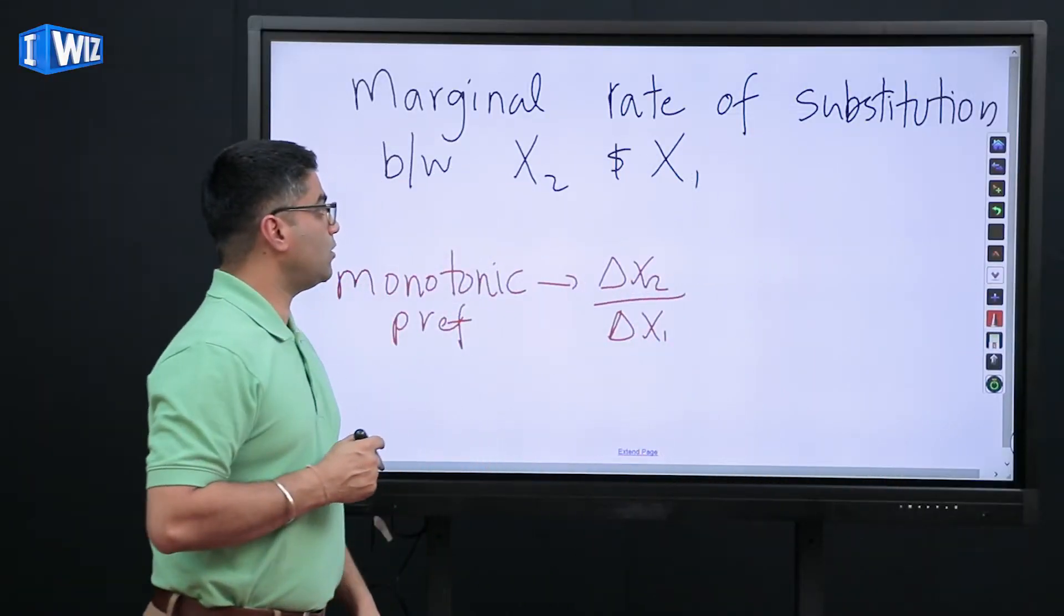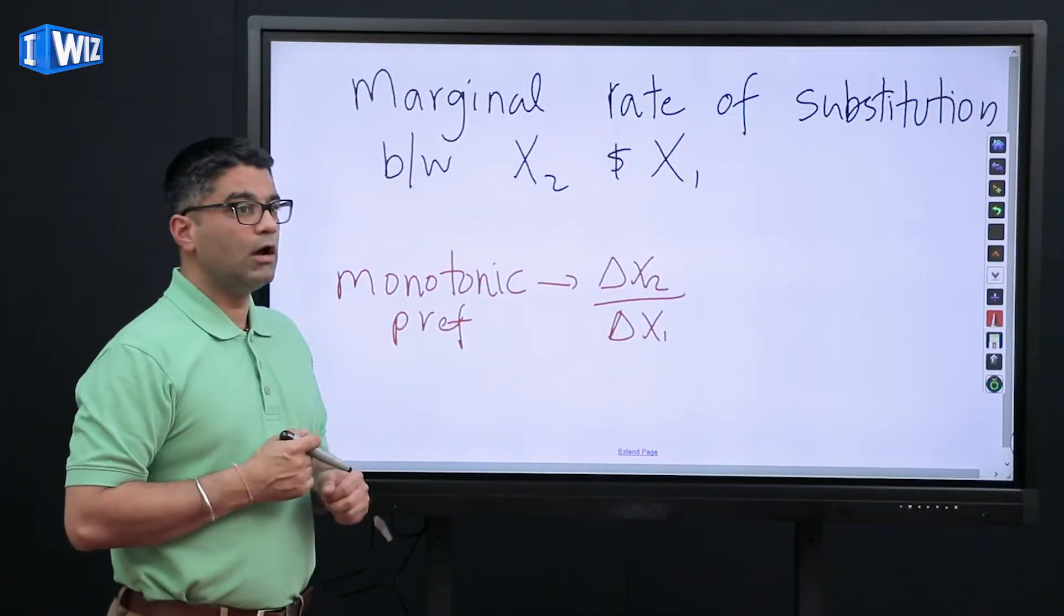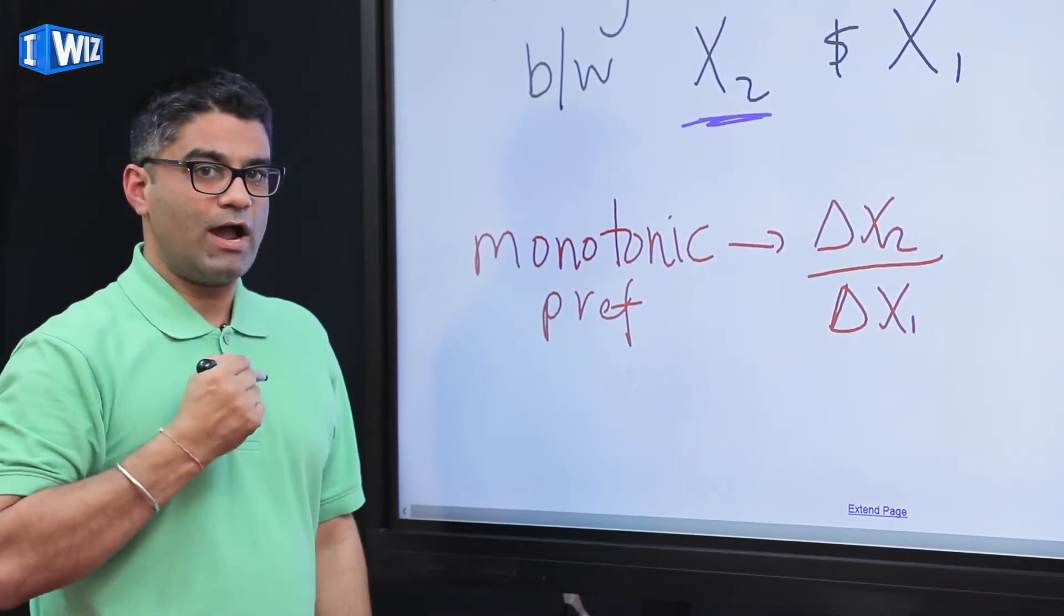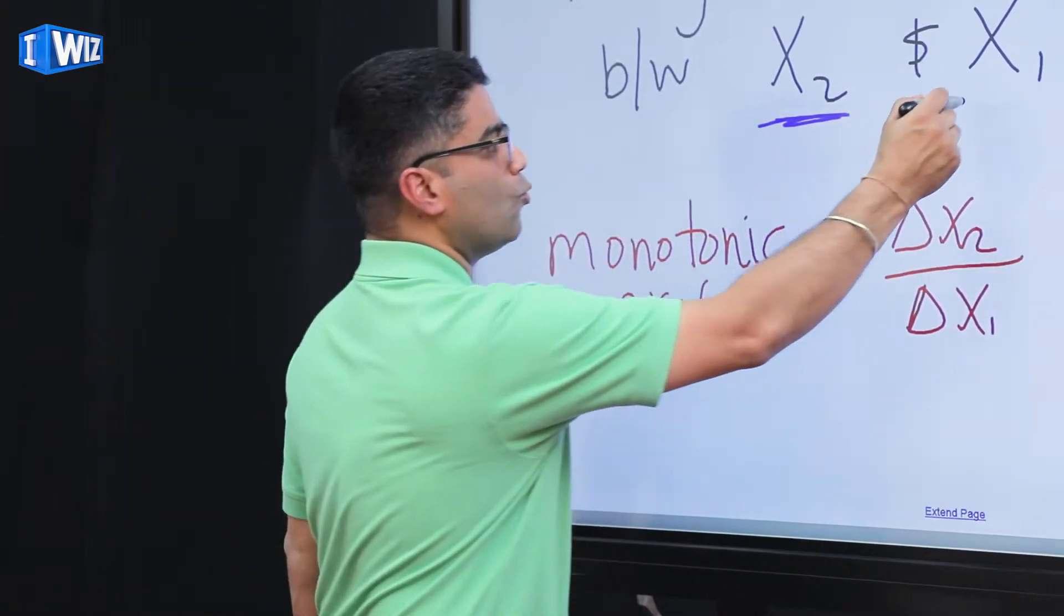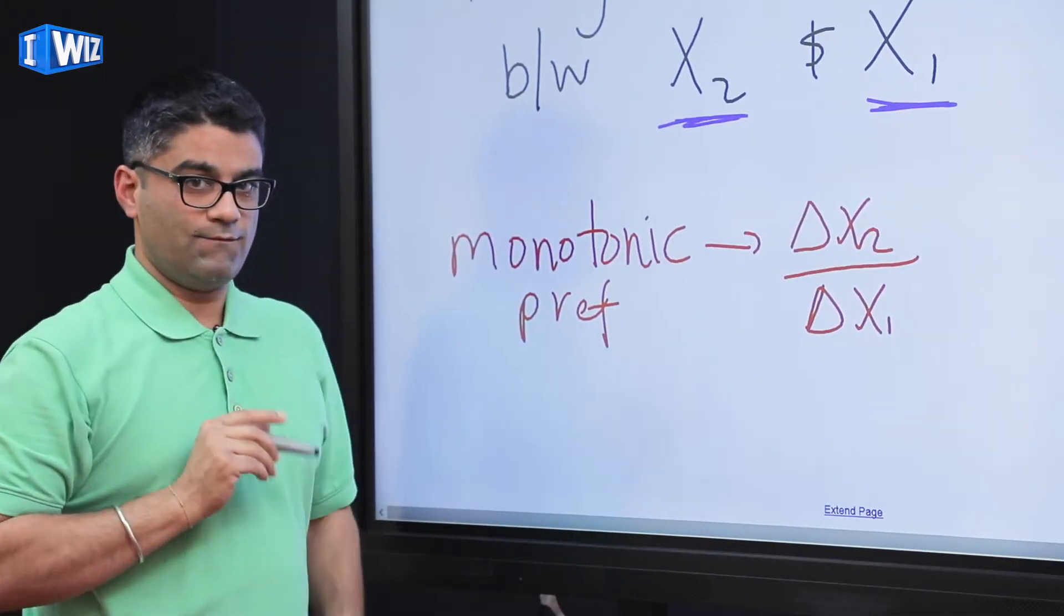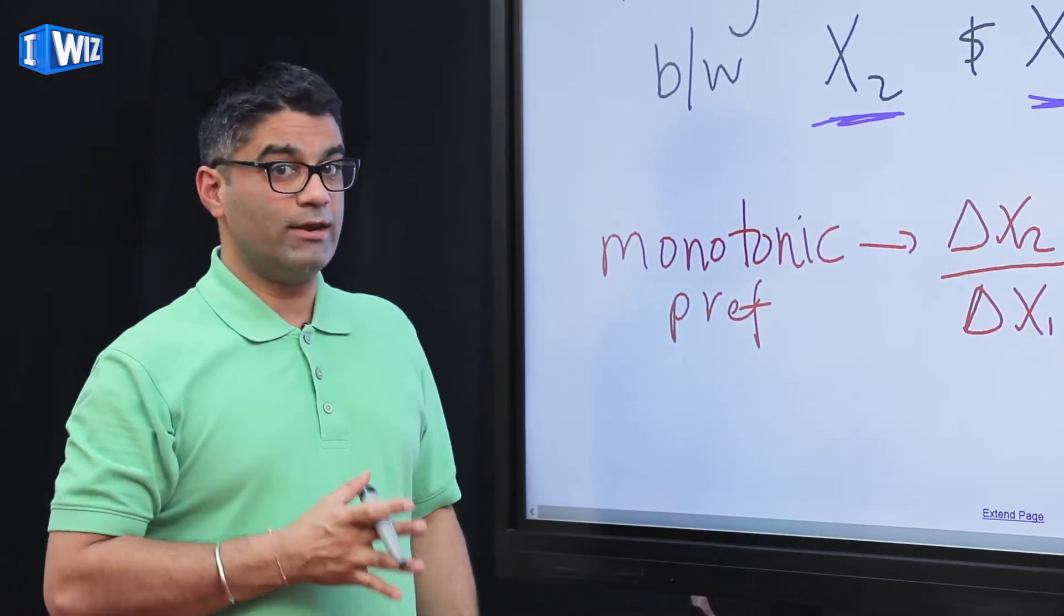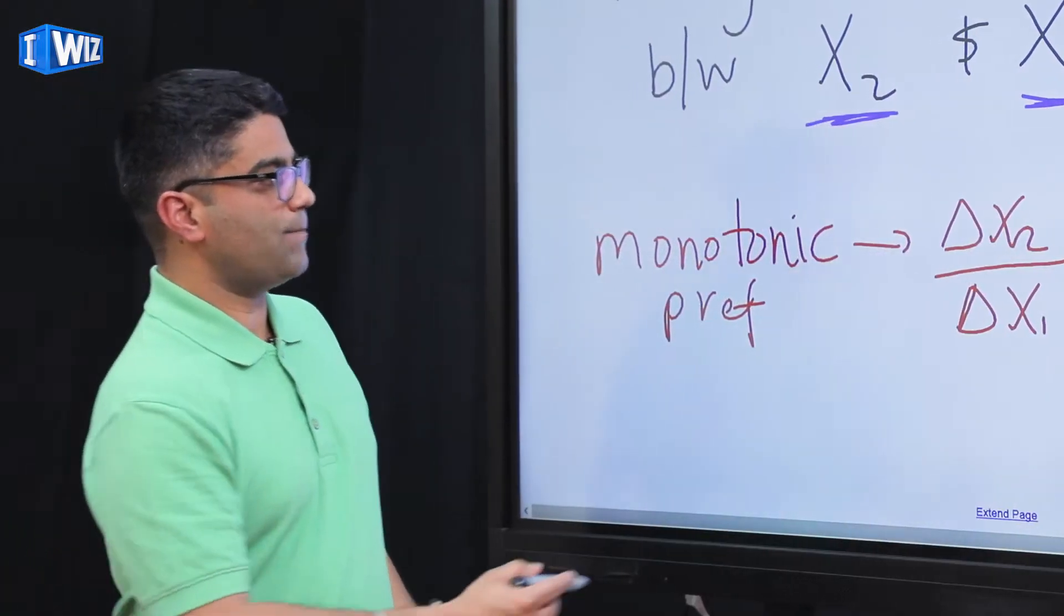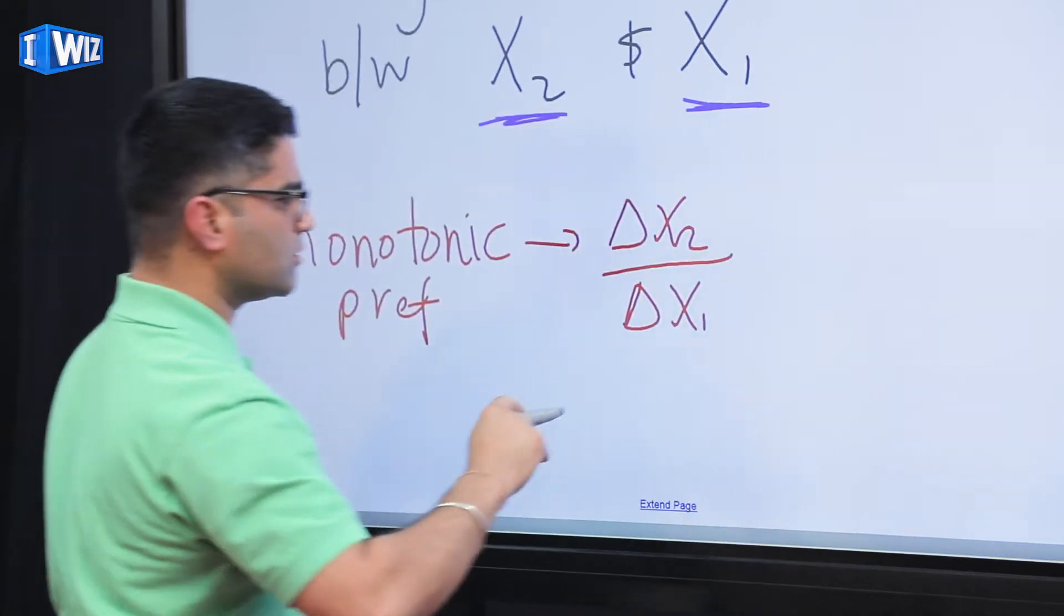A very important concept is called the marginal rate of substitution between x1 and x2, which is how much of x2 I'm willing to give up to get one more unit of x1, and very importantly, leave me equally happy. So when we're talking about the shape of the indifference curve,